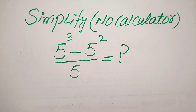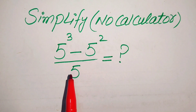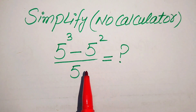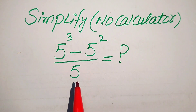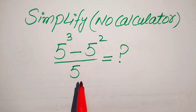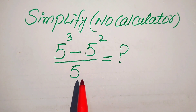Hello everyone. How to simplify this algebraic expression: we have 5 cubed minus 5 squared, divided by 5, and we write this algebraic expression into its simplified form.